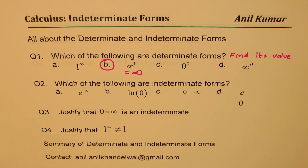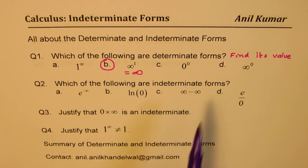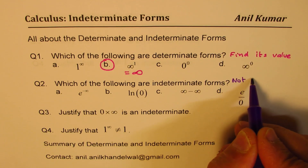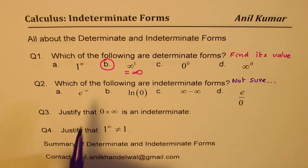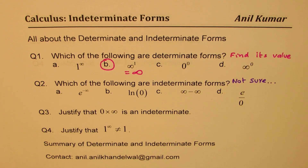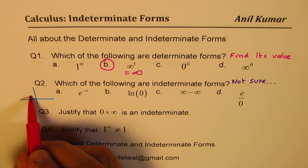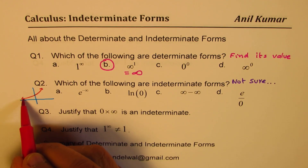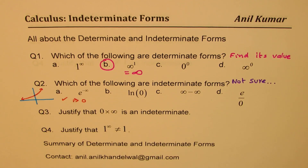Now let's look into question number two: which of the following are indeterminate forms? That means we are not sure about the value. Consider e to the power of minus infinity. I think we are sure about it, since the exponential graph keeps on increasing. When you are approaching minus infinity, it is approaching zero. So this is approaching zero — we know that.